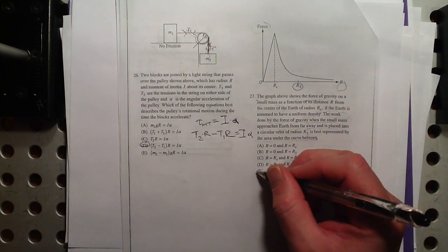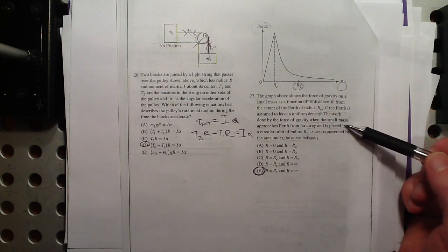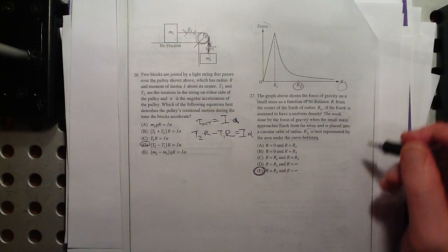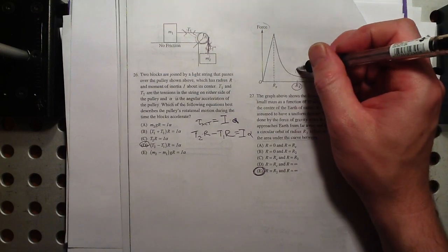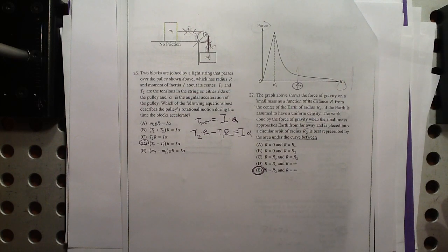So that's from far away. I think we're talking about from infinity in an orbit of r2. So that's just E, isn't it? So from far away, and it's placed into a circular orbit of radius r2. There you go.